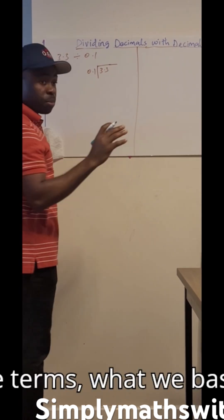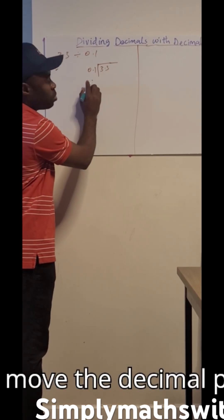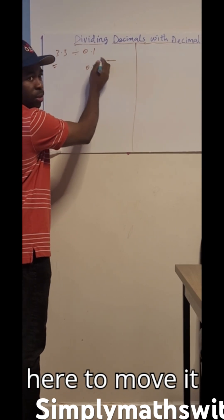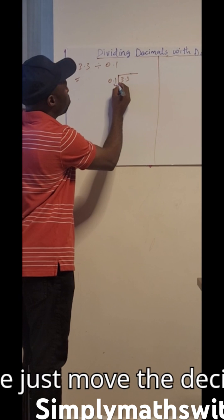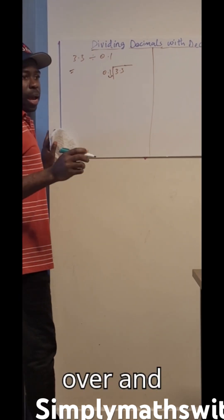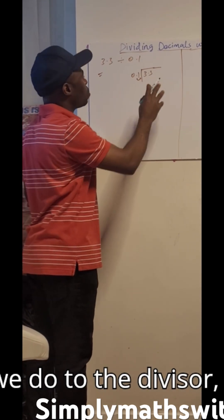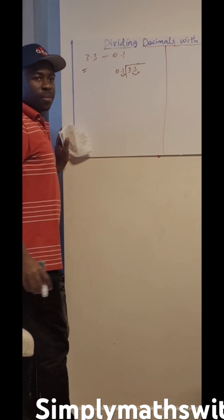In simple terms, what we basically do is to move the decimal place here, to move it over. Because we have one decimal point here. So we just move the decimal point over. And whatever we do to the divisor, we also do it to the dividend. We do the same here.